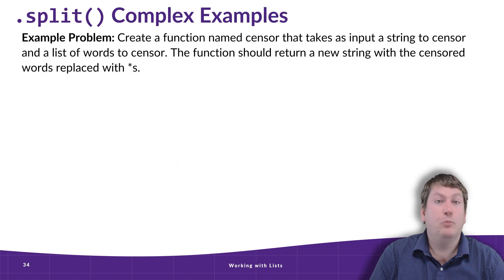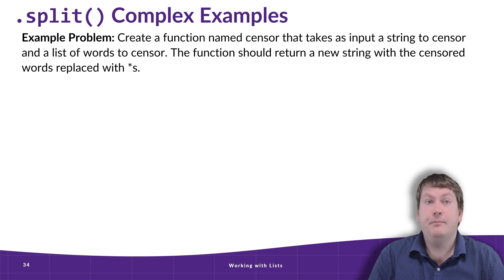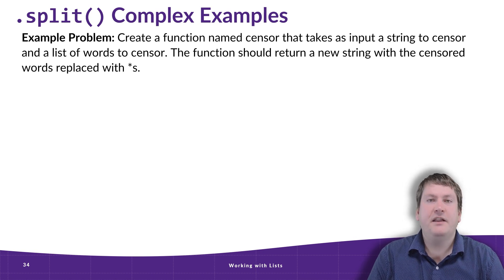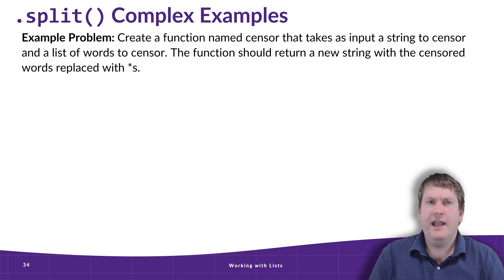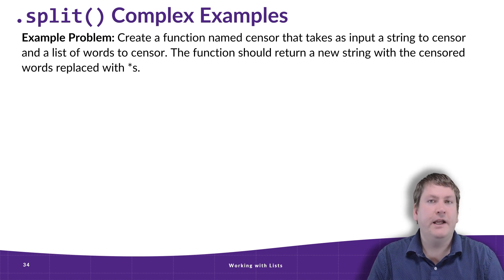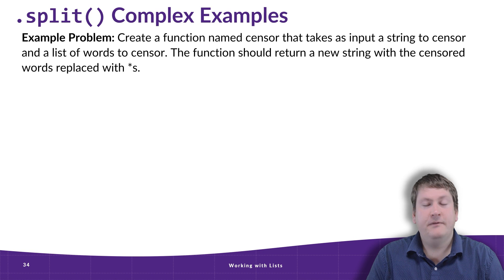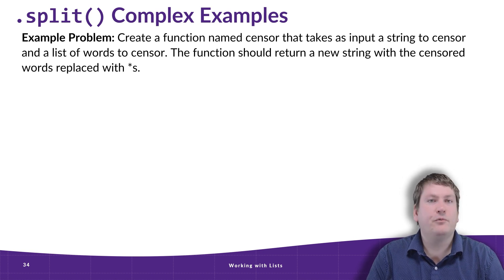Let's take a look at a more complex example using split. We want to create a program with a function named 'censor' that takes as input a string to censor and a list of words to censor. The function should return a new string with any words that were in our list of words to censor replaced with asterisk characters. You can try writing this program yourself and then unpause to work through the solution.